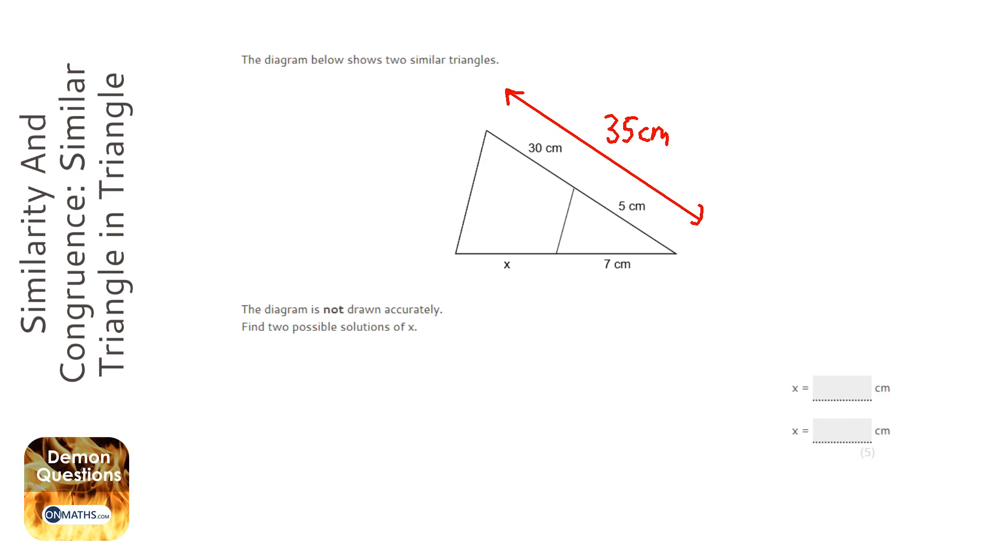We've got two similar triangles which means one's a direct enlargement of the other one, so this seems quite a simple task relatively. That five there grows to 35.